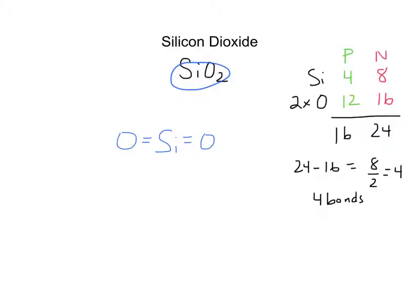Remember what we had to do with ammonia: we had to check and make sure we've represented all of our electrons. Right now we have two, four, six, eight shown, and we need to make sure we show sixteen — we've only shown half our electrons. At this point, if you look at silicon, you'll notice it already has two, four, six, eight — an octet of electrons around it. So we don't need to put any more lone pairs on silicon. Notice that's different from ammonia, where nitrogen did have a lone pair.